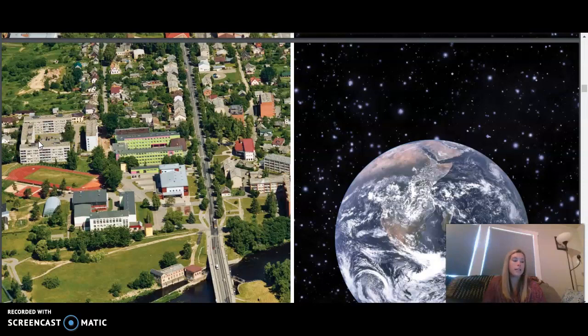Our next word is satellites, natural or man-made objects that orbit around another planet or other celestial objects. And our last word is terrain, the surface of the land and its features.